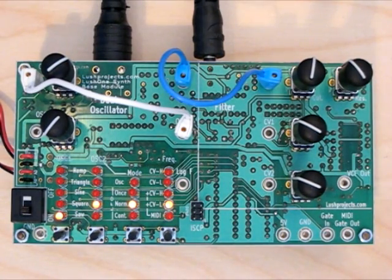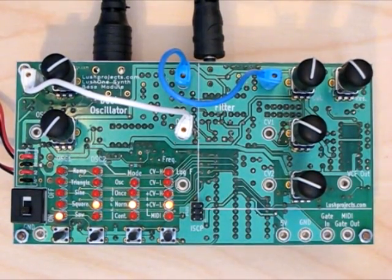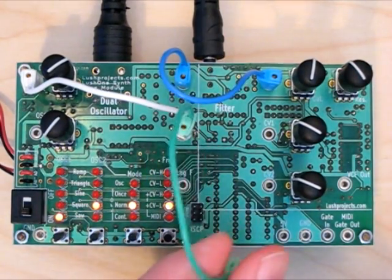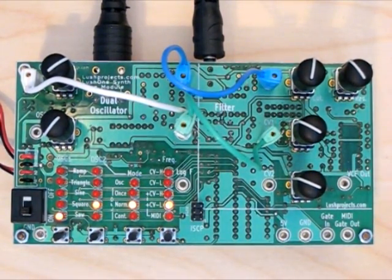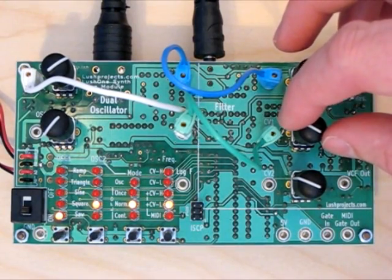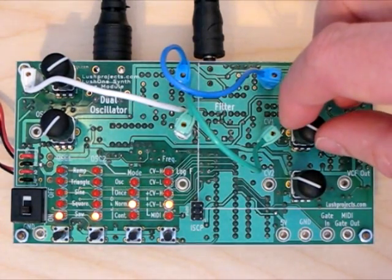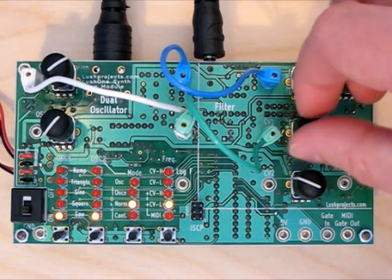There's nothing in principle that stops you patching one output to multiple inputs. So if we fancy it, we can also add a second patch from the oscillator 2 output into the control voltage input for the filter, and then we can get different effects by adjusting the two gain controls and the master controls. We'll set that back to a sawtooth.